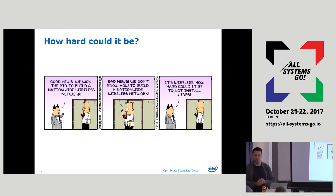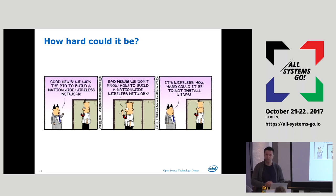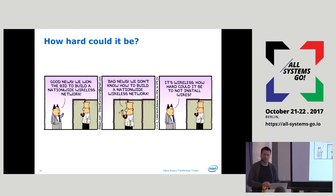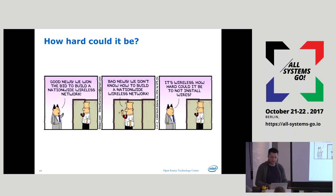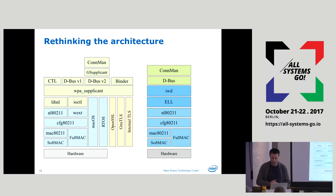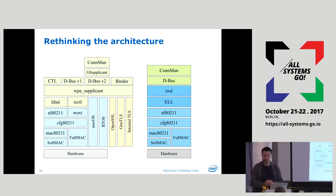So how hard can it actually be to start from scratch? We had a really good idea what we were getting into. We were still a little bit blindsided with some key pieces where things got more complicated, or where we assumed the Linux kernel was doing the right thing and it wasn't. But generally we had a good idea going in. We took the previous diagram and set out to do this really simply — we don't want wireless extensions, they're dead.